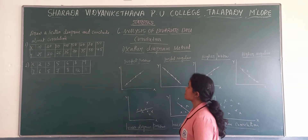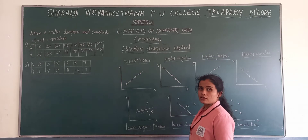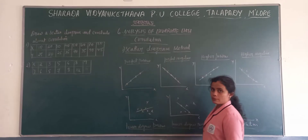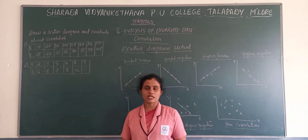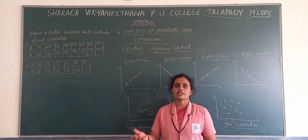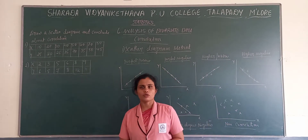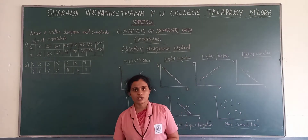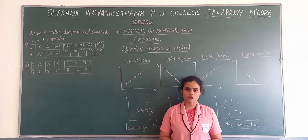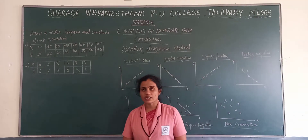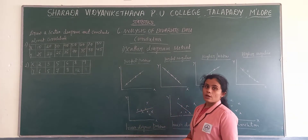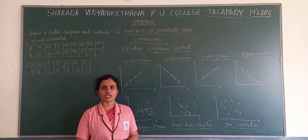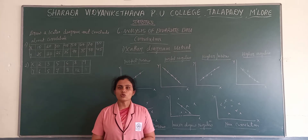Namaste students, welcome to statistics class. Yesterday we started with the 6th chapter, that is analysis of bivariate numbers, where we discussed about two variables. When we have two interdependent variables, we check whether there is a relationship between those two variables or not. We have seen the first part where we discussed about correlation — it measures the degree of relationship between variables. We discussed positive correlation, negative correlation, perfect correlation, perfect positive, perfect negative, and variables with no correlation.